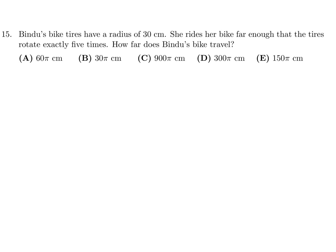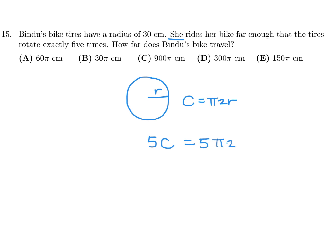Bindu's bike tires have a radius of 30 centimeters. She rides her bike far enough that the tires rotate exactly five times. How far does Bindu's bike travel? The circumference equals π times 2 times the radius. She travels five times the circumference, so it's 5 × 2π × 30 = 300π centimeters. Number 15 is D.